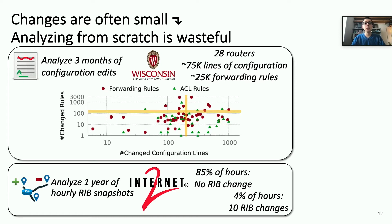Similarly, as another example, we observed a year of hourly route table snapshots from a large national research and education network. We excluded hours where there was a configuration change, so we could only focus on changes that were resulting from external route updates. And we observed that 85% of the time, despite there being external route updates, there's actually no change in the router's most preferred routes, so the forwarding rules remain the same. And only 4% of the time are there actually more than 10 route changes that result from these external route updates within a single hour. So, in summary, we see that changes are often small, and analyzing snapshots from scratch just doesn't make sense.